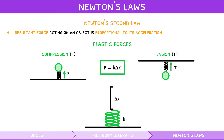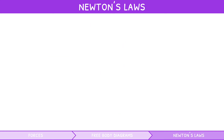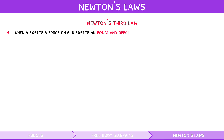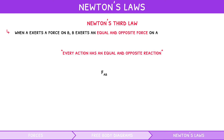Newton's first and second laws have described the properties of forces on individual objects. But how do two objects interact with one another? Newton's third law covers this. Newton's third law states that when object A exerts a force on a second object B, object B exerts an equal and opposite force back on object A. This is colloquially phrased as every action has an equal and opposite reaction, and can be mathematically expressed as the force of A on B equals negative force of B on A.